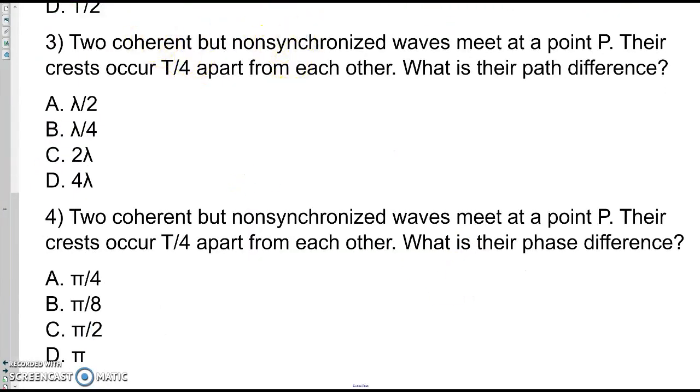Two coherent but non-synchronized waves meet at point P. Their crests occur T over 4 apart from each other. That's the amount of time between the two crests occurring. What's their path difference? So we're going from a time difference into a path difference, the difference in their lengths. Or you can think of it as we're converting from some number of periods into some number of wavelengths. We start with T over 4.